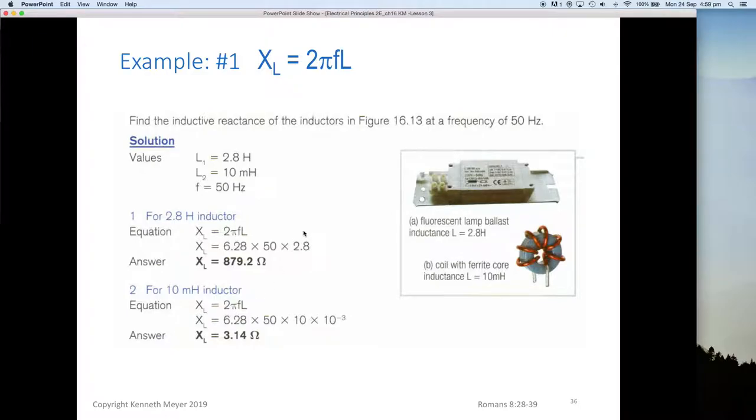Here's a little example. You can see here a regular old copper wound ballast and an inductor wrapped on a ferrite toroid core. Find the inductive reactance of these two particular inductances at 50 Hertz. Inductor one is 2.8 Henrys, inductor two is 10 millihenrys, and our frequency is 50 Hertz.